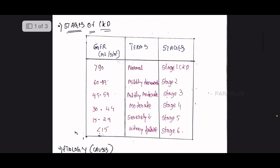The stages of CKD are based on GFR — glomerular filtration rate. There are six stages: Stage 1 is GFR above 90 ml; Stage 2 is 60 to 89, mildly reduced; Stage 3a is 45 to 59, mildly to moderately reduced; Stage 3b is 30 to 44, moderately reduced; Stage 4 is 15 to 29, severely reduced; and Stage 5 is less than 15 ml — kidney failure with very low filtration rate.